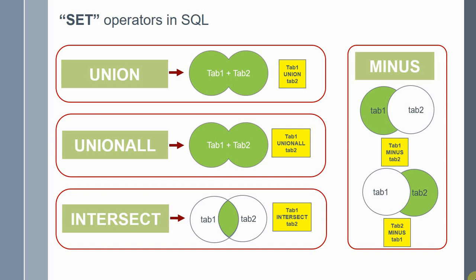The third set operator is intersect. It returns the common rows present between two result sets, two SQL statements. And the final set operator is minus. This returns the value from one select statement which is not present in another result set. This is like either A minus B or B minus A — either from the first select statement you want to remove the records present in the second result set, or vice versa.